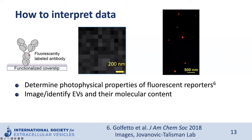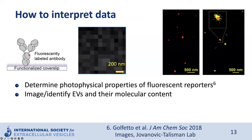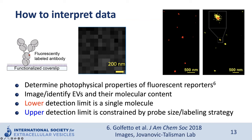Next, we identify EVs and determine their molecular content. If we image abundant membrane proteins such as the tetraspanins, we can easily identify EVs, shown here in red. If we want to assess cargo that is not abundant, we can use two-color imaging: EV membranes are labeled in one color and the desired cargo in another color. EVs are identified based on the membrane staining, shown in yellow in this example; then we can assess molecular cargo content and the number of EVs that contain a cargo of interest. Since SMLM has high sensitivity, the lower detection limit is a single molecule, while the upper detection limit is constrained by probe size and labeling strategy.